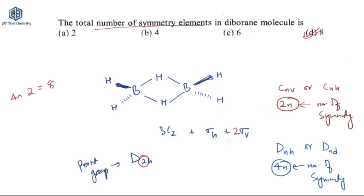So this is how you can find out the number of symmetry elements. In this particular molecule you have 2 σv, 2 S2 — sorry, 1 S2 — and 1 identity. These are the 8 elements of symmetry in this particular molecule, and this is how this question has to be done.